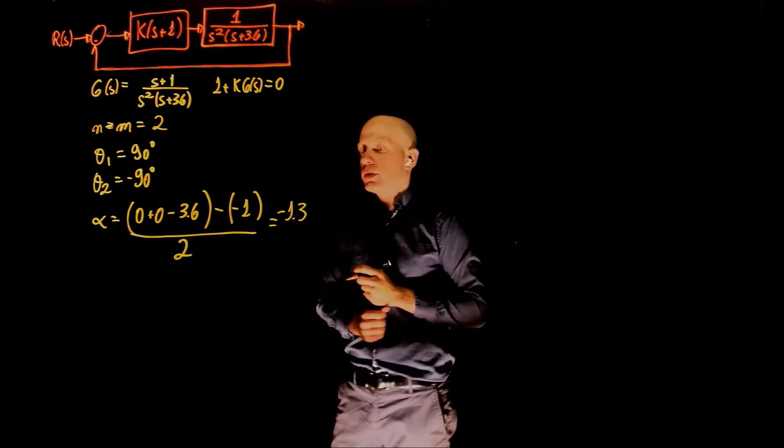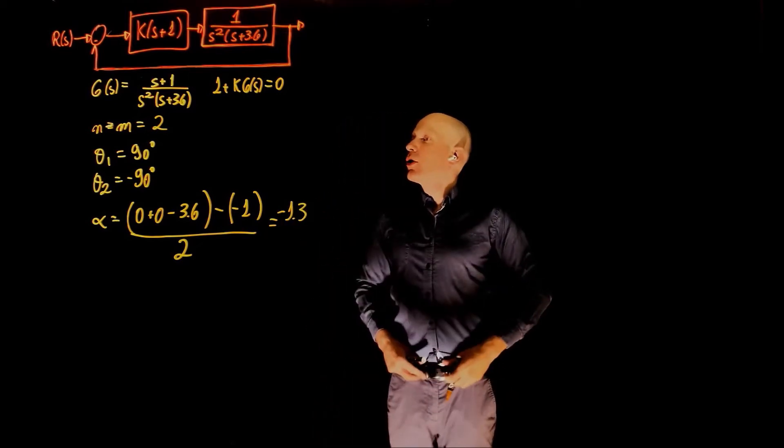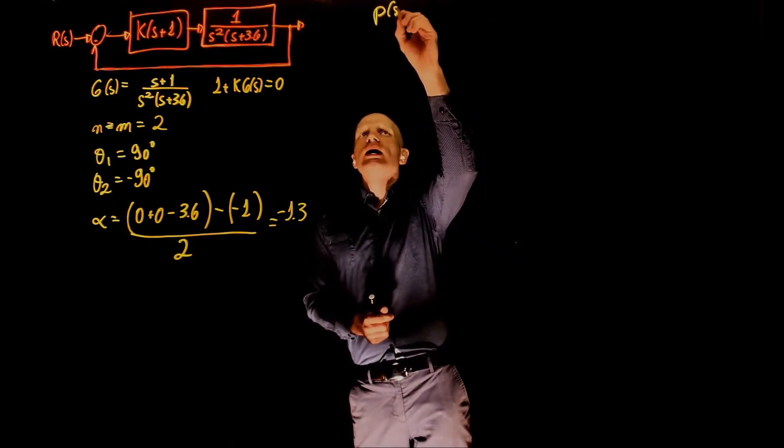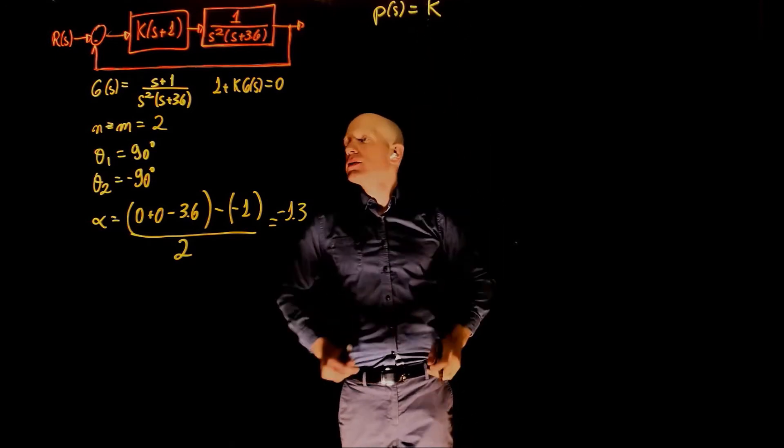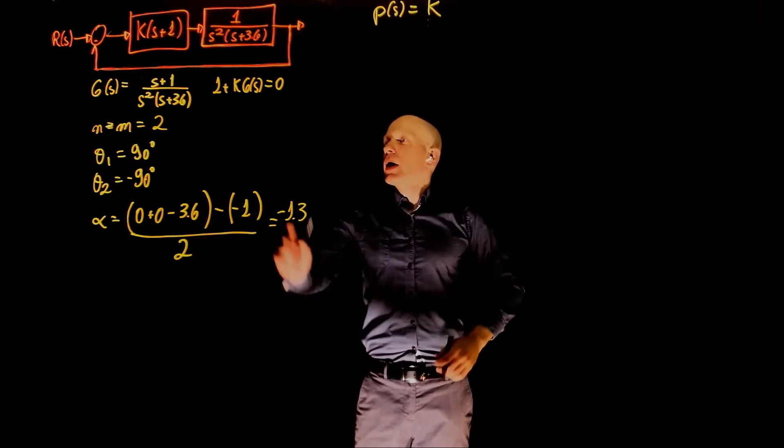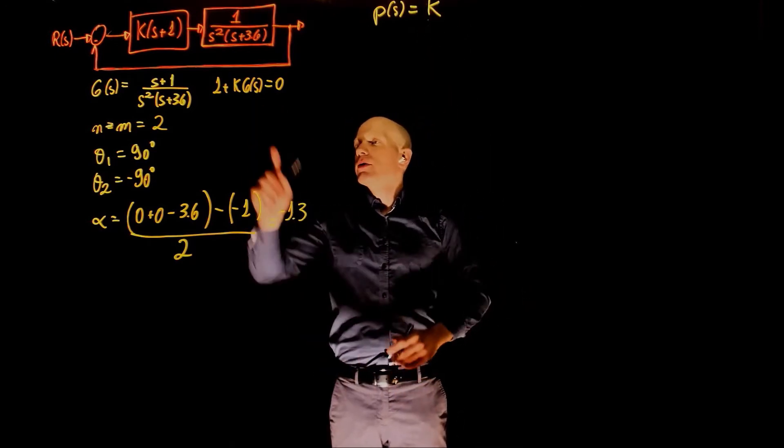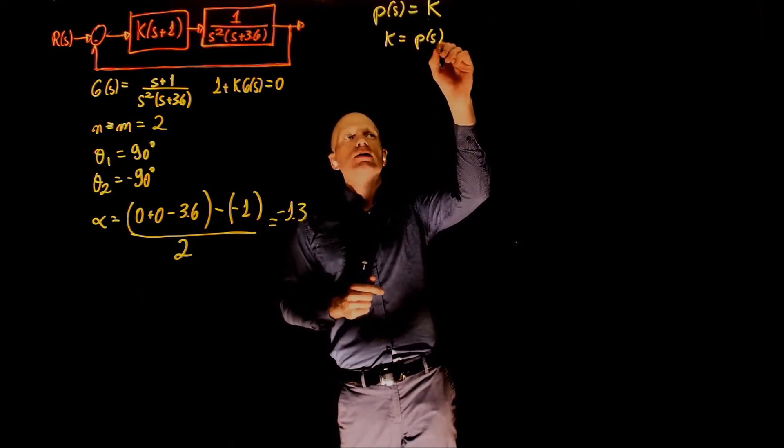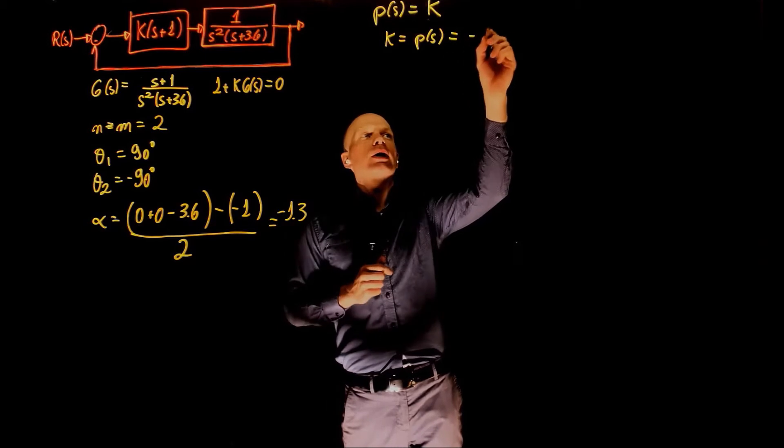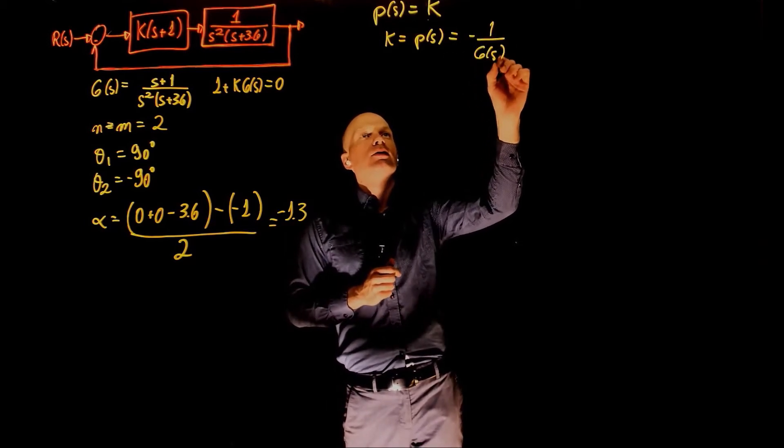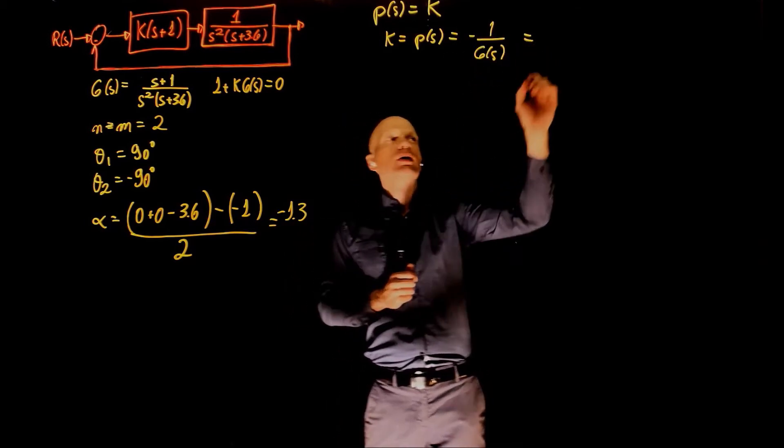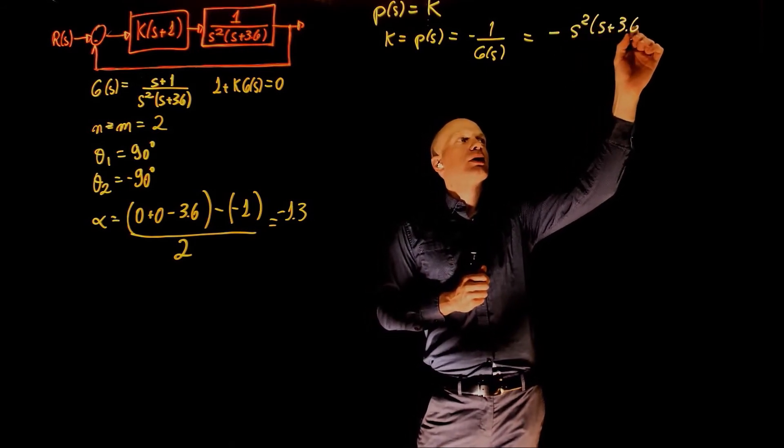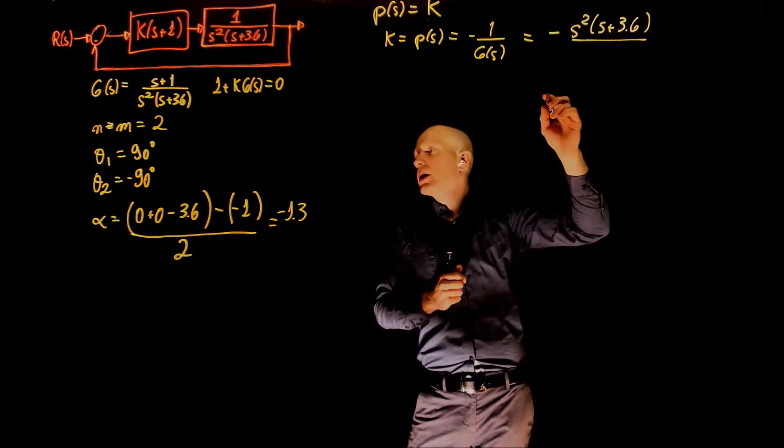Now let's calculate the breakaway or breaking points, if any. To calculate the breakaway or breaking points, we set k to p of s, and isolate for k. So k, which is p of s, is equal to negative 1 over g of s, which is negative s squared s plus 3.6, divided by s plus 1.